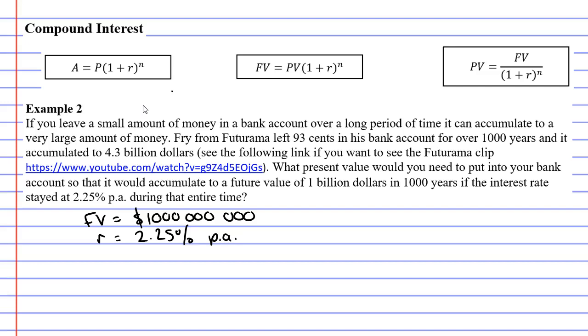And what we need to do is take this interest rate and divide it by 100, which is what we always do when we have a percentage. And when we divide it by 100, we get 0.0225. And the number of years we're doing is 1,000. Now, we're not doing this monthly or weekly. We're doing this yearly.